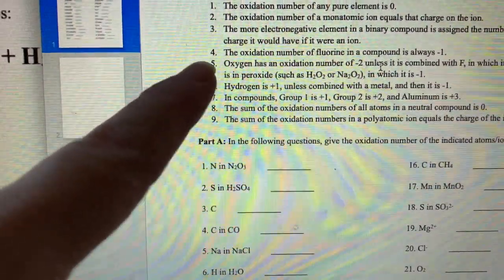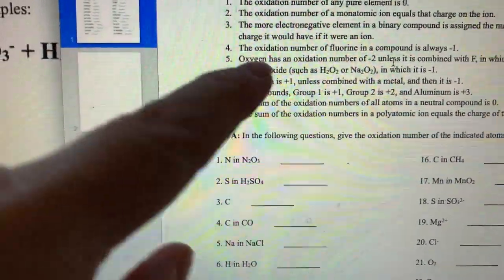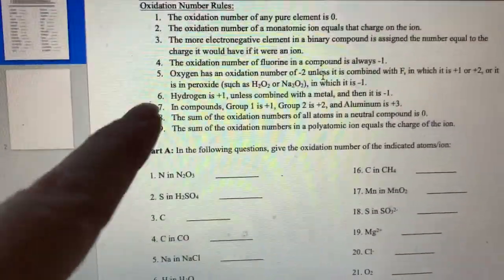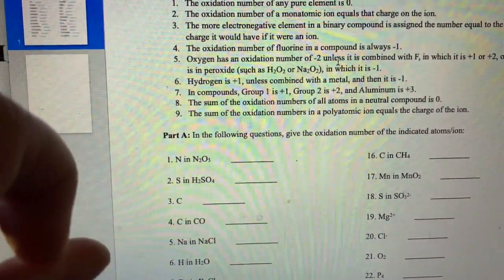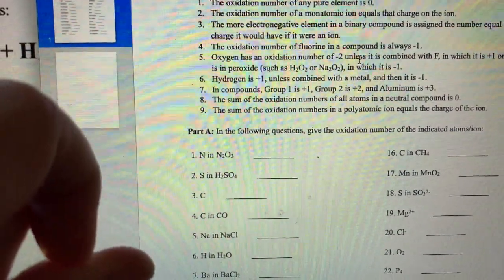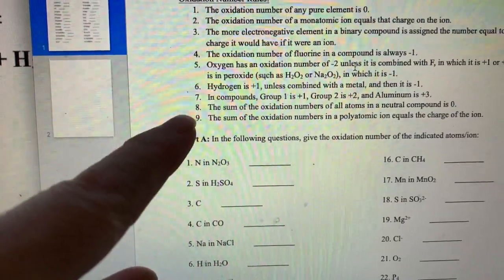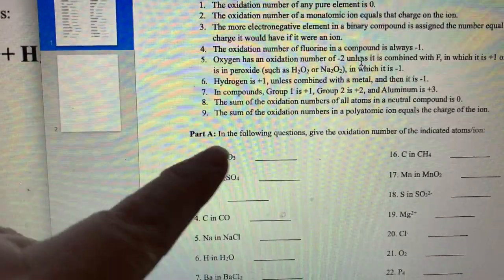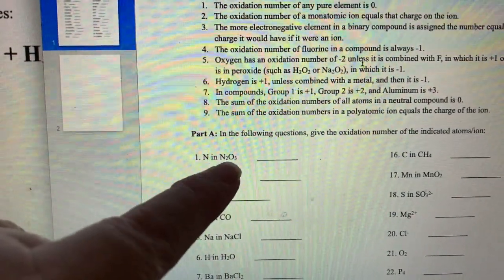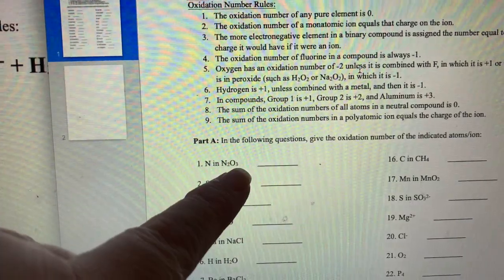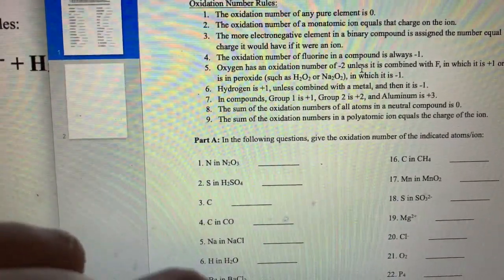You can kind of read these. Oxygen as I said is going to be negative two. You've got a couple exceptions, I'm not going to be asking you any of the exceptions. Hydrogen is going to be plus one. If you're in group one you're plus one, group two is plus two, aluminum is plus three. Eight and nine are really important. The sum of the oxidation numbers in a neutral compound will be zero, and that's what I was referring to with the N₂O₃. The whole thing has to equal zero. So if you know oxygen's negative two you can figure out what nitrogen is.